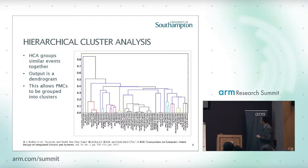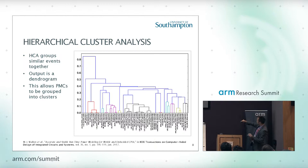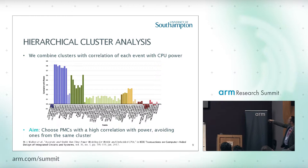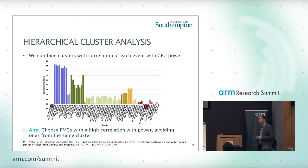Our approach is to take all the data from performance counters obtained experimentally across a range of different workloads and perform hierarchical cluster analysis to determine how correlated the different performance counters are. This effectively clusters them — these ones are similar or correlated, and ones from different clusters are not. We then pull them together into a set of different clusters indicated by different colours, and we aim to pick individual performance counters that have a good correlation with power but from different clusters.